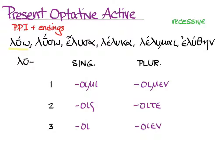Accent is recessive. I can't give you a default translation because we don't have any context, but the aspect is progressive or repeated for the present tense. Before we go on, look at these endings and notice that all of them have an iota in them. This is characteristic of all optative endings. In this instance they combine with the omicron — and we're used to seeing omicrons in present tense endings — to make those -oi diphthongs. And then we've also got some familiar person markers.